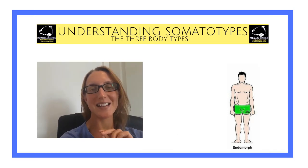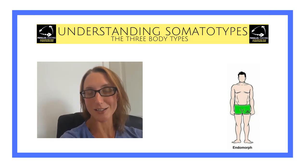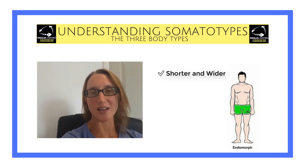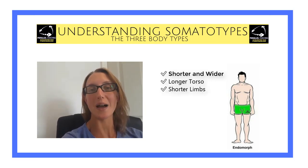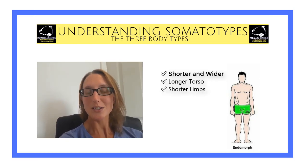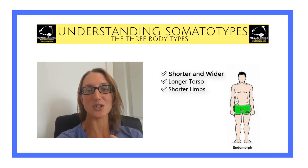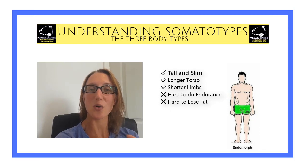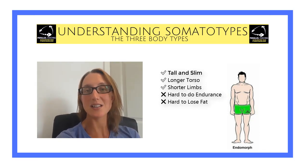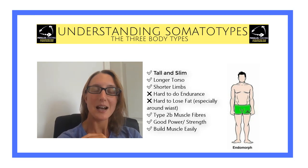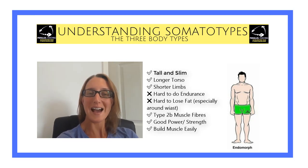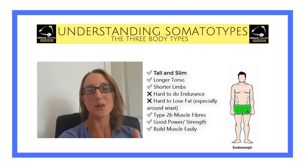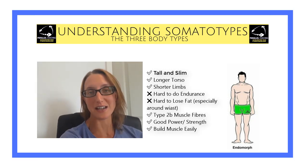The second body type is an endomorph, which is the opposite extreme. They generally are a little bit shorter and wider, with a slightly longer torso compared to their arms and legs which are slightly shorter. They find it much harder to do aerobic work or to lose fat easily. This is because they have type 2b muscle fibers as their predominant muscle fiber, so they are great at power and strength, and they build and gain muscle mass very easily.